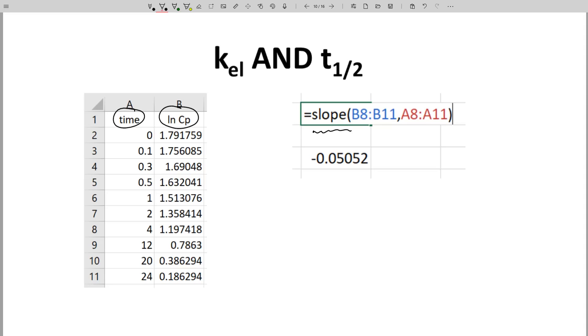Just type equal slope, and then first highlight your desired Y values. So column B, these are the column B values, and then the corresponding X values, that's column A, are time values, and press Enter.